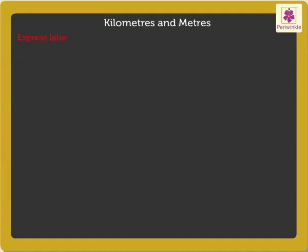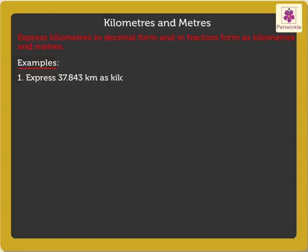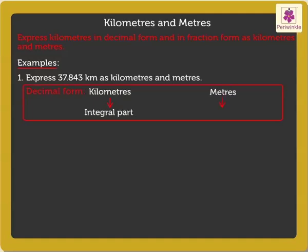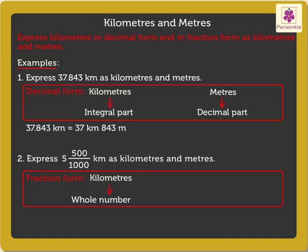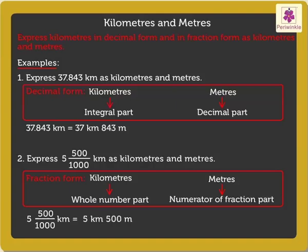Next is to express KILOMETERS in decimal form and in fraction form as KILOMETERS and METERS. Let's look at a few examples. Express 37.843 KILOMETERS as KILOMETERS and METERS. We know that KILOMETERS form the integral part and METERS the decimal part. Thus, we get 37 KILOMETERS and 843 METERS. Express 5 and 500 upon 1000 KILOMETERS as KILOMETERS and METERS. We know that KILOMETERS form the whole number part and METERS the numerator part of the fraction. The answer is 5 KILOMETERS and 500 METERS.